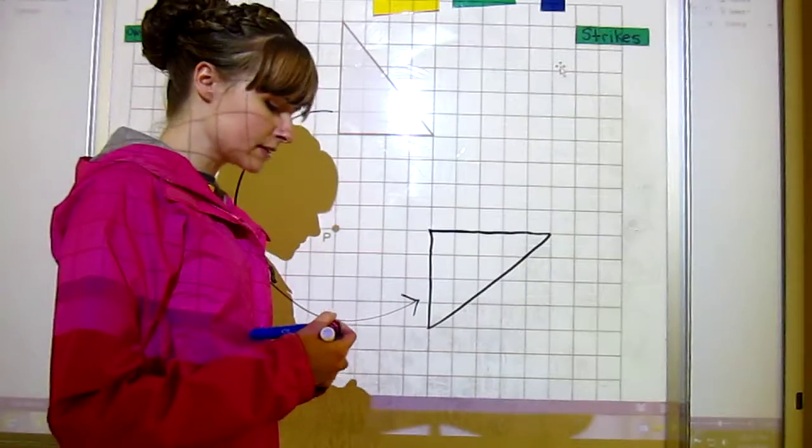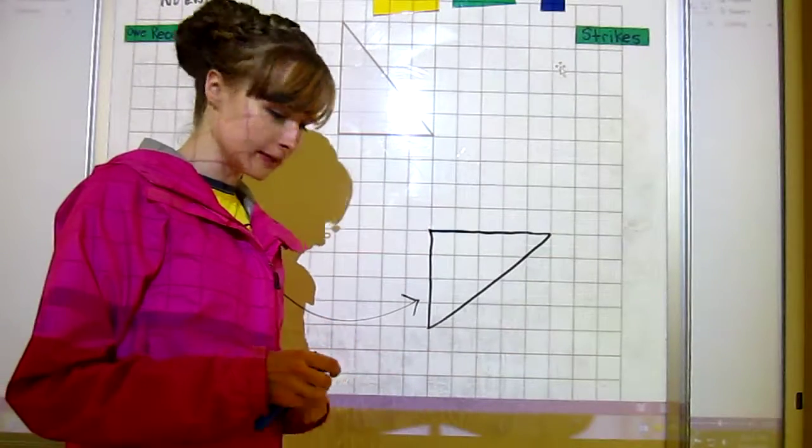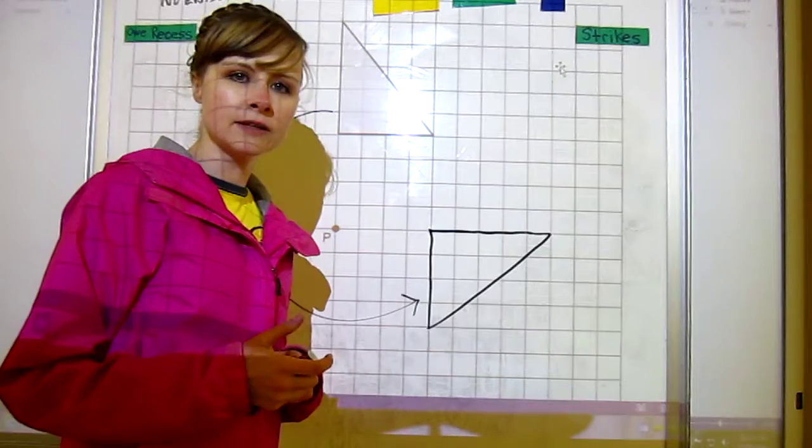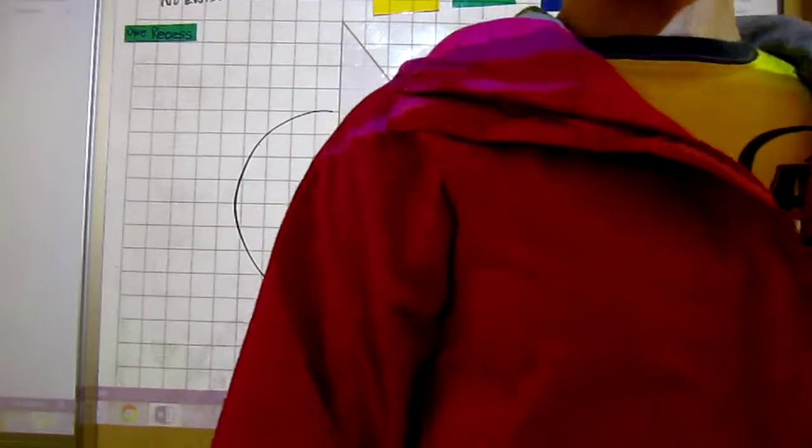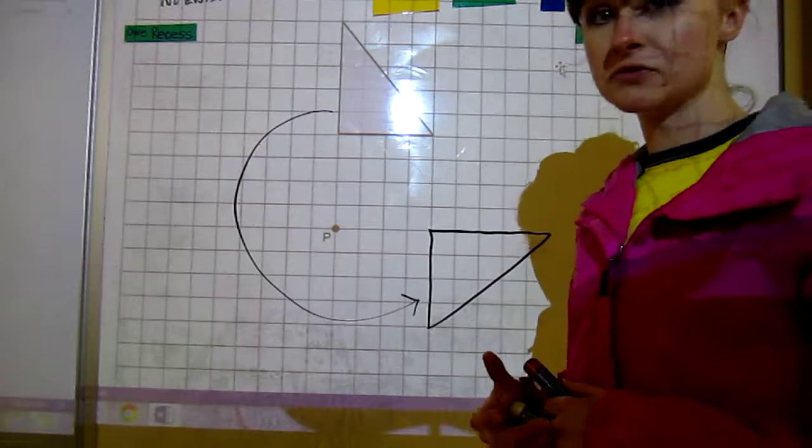Okay, so those are two strategies that you can use. You can try them both out, see which one works for you, or maybe different ones work for different questions. Your assignment is on the bottom of your page—you're doing numbers one to four.